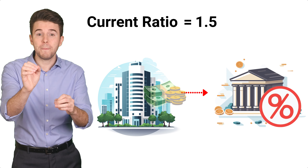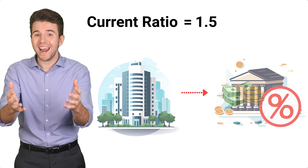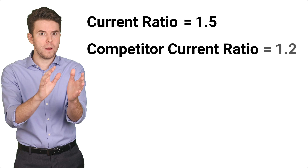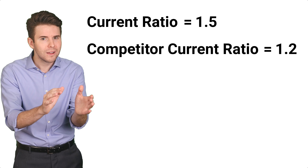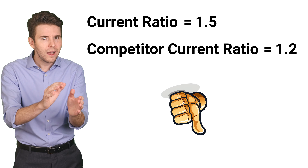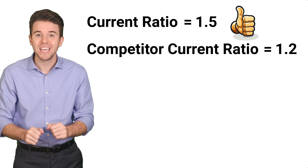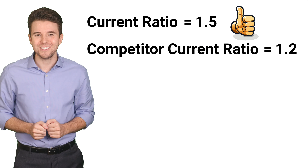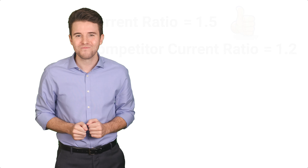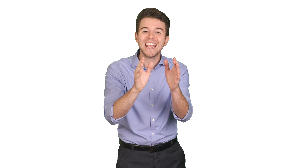Further, if we were to compare this to a competitor who has a current ratio of 1.2, our company is in a slightly stronger position to cover short-term obligations. In summary, the current ratio is a great tool to gauge a company's ability to pay its liabilities in the near future.